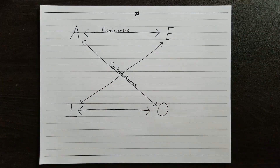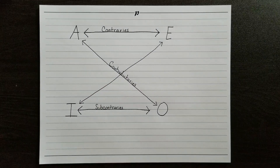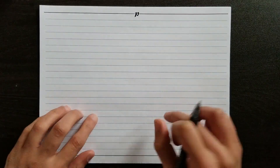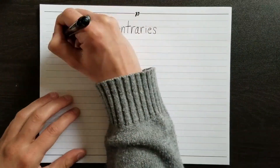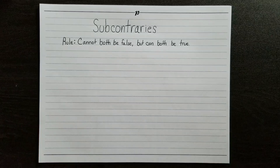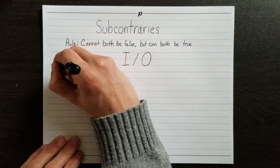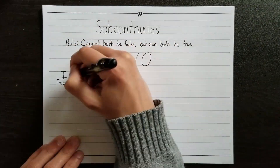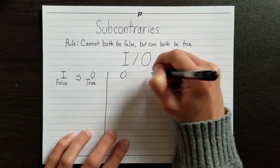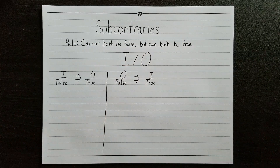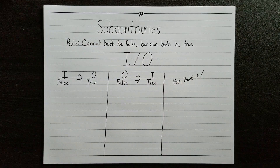The next relation we'll consider is between I-type and O-type statements. I-type and O-type statements are each other's subcontraries. Subcontraries are pretty much the opposite of contraries — they cannot both be false at the same time, but they can both be true. If we know that the I-type statement is false, then the O-type must be true. And if we know that the O-type is false, then we know that the I-type must be true. But that's all we can know. If either of these is true, then we cannot say anything about the other.